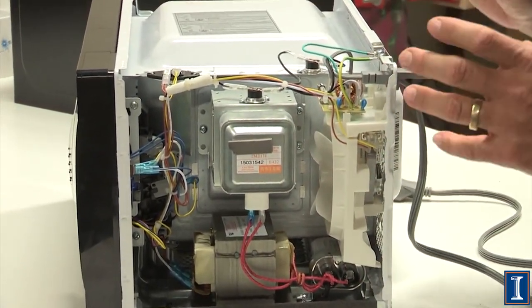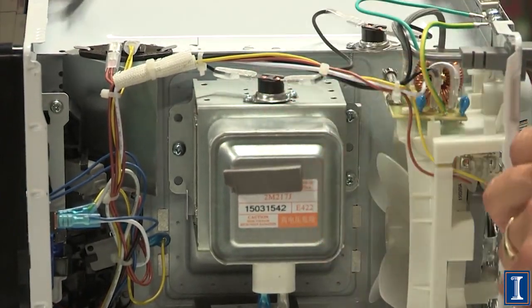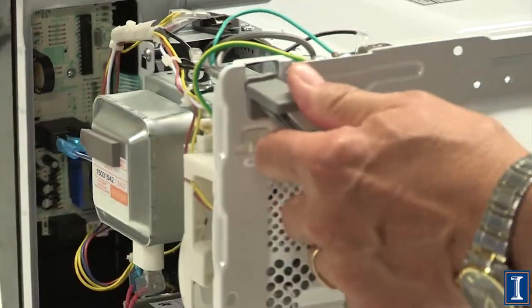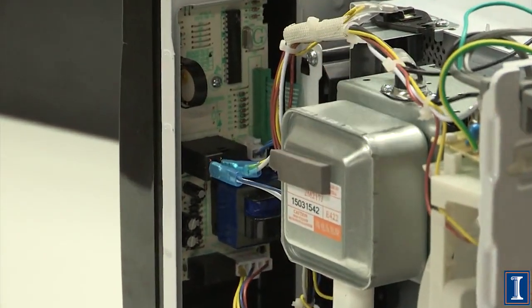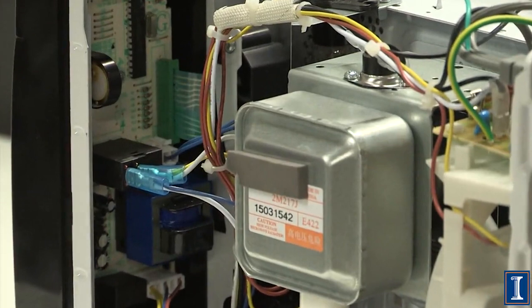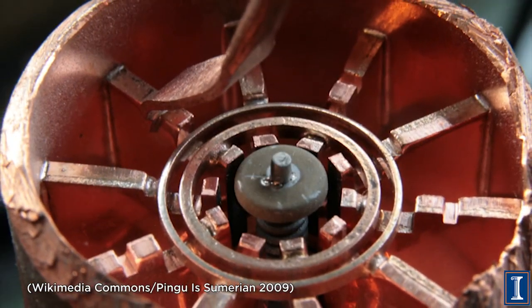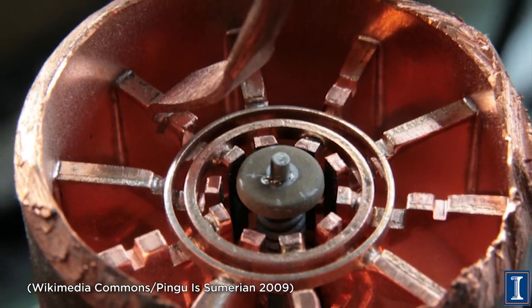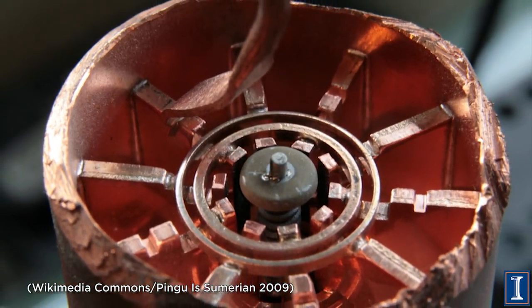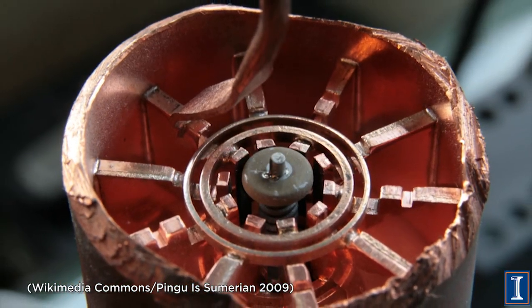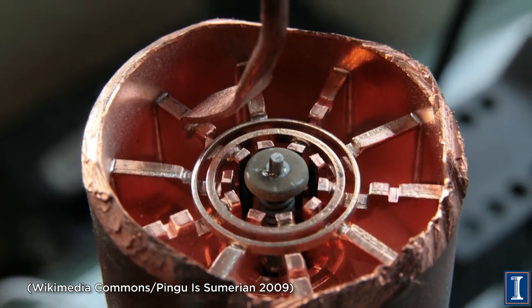The magic of a microwave happens in this device right here. This is called the magnetron. You kind of get a sideways view of it there too. In the magnetron, it has a cavity and electrons are boiled off of a filament. Part of the power has to keep this up and create the electrons.